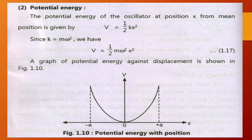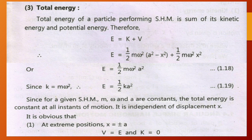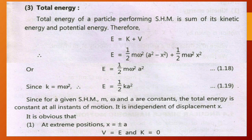The total energy of a particle performing SHM is the sum of its kinetic energy and potential energy. Therefore, E = K + V. Substituting the values of K and V, we get E = ½Mω²(a² - x²) + ½Mω²x², which simplifies to E = ½Mω²a². Since k = Mω², we can also write E = ½ka².